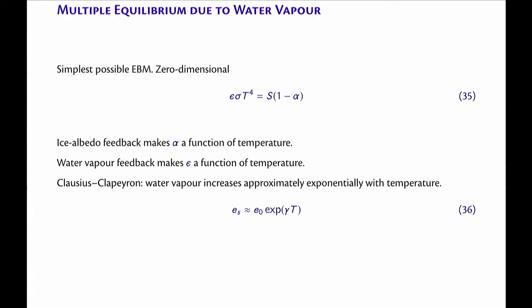I'm going to make emissivity a function of temperature because there's more water vapor as the atmosphere gets warmer — more water vapor means more greenhouse effect. The zeroth-order approximation to how much water vapor is present at any given place is determined by temperature. If the temperature is higher, a given volume can hold more water vapor — that's the Clausius-Clapeyron relation. Where it's hot, you get more water; where it's cold, you get less.